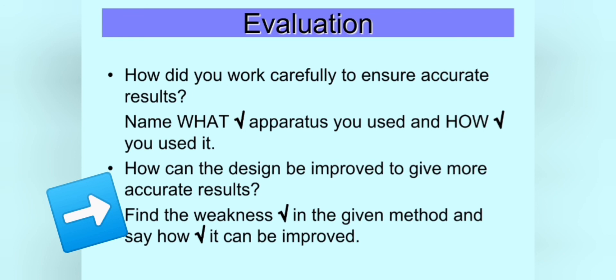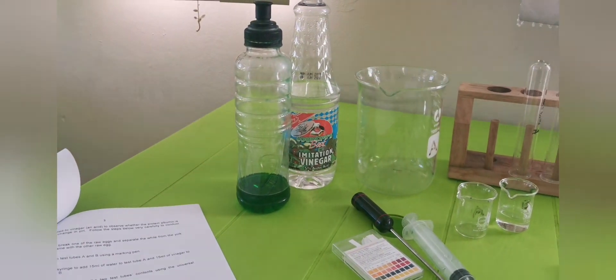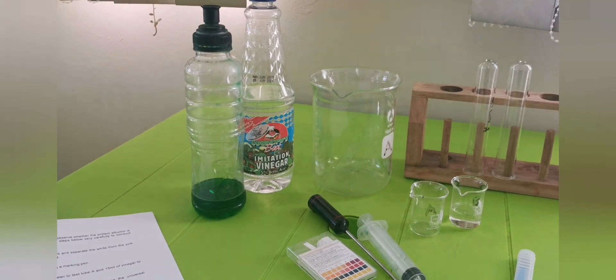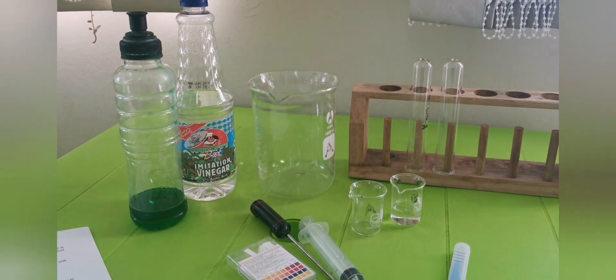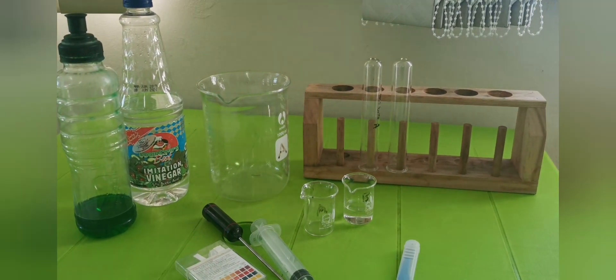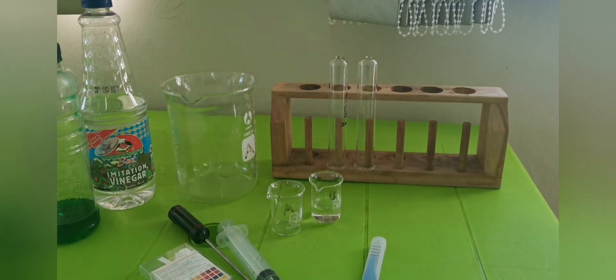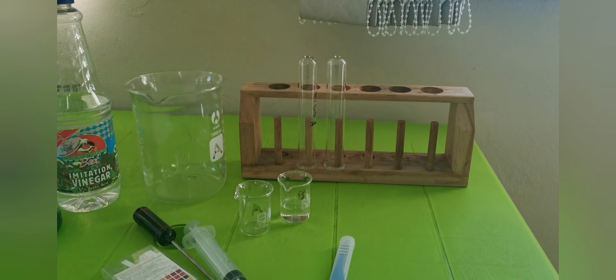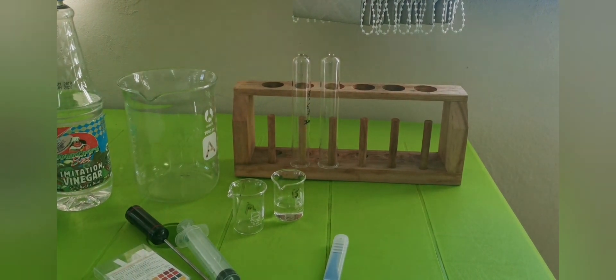You will also be asked possibly how can the design of the experiment be improved to give more accurate results. Now, please don't say that the method was silly or we needed better equipment. You should find the weaknesses in the given method and then say how it can be improved. So throughout any practical exam, remember you get most of your marks for what you're doing. That's why you don't study for a prac exam because it's not about what you know and what you can remember. Good luck for your prac exam.